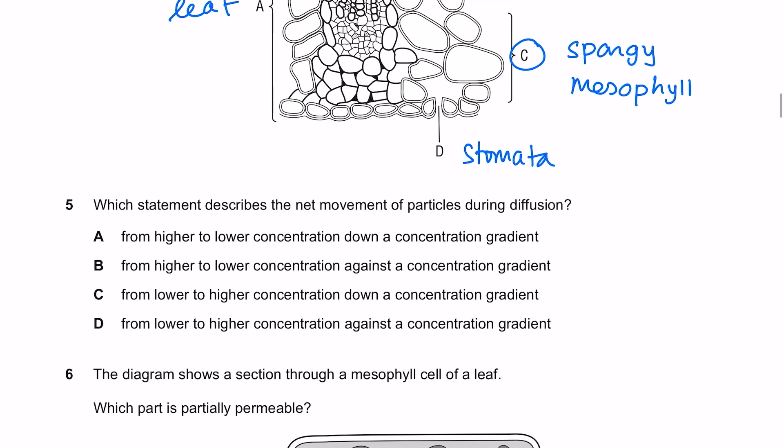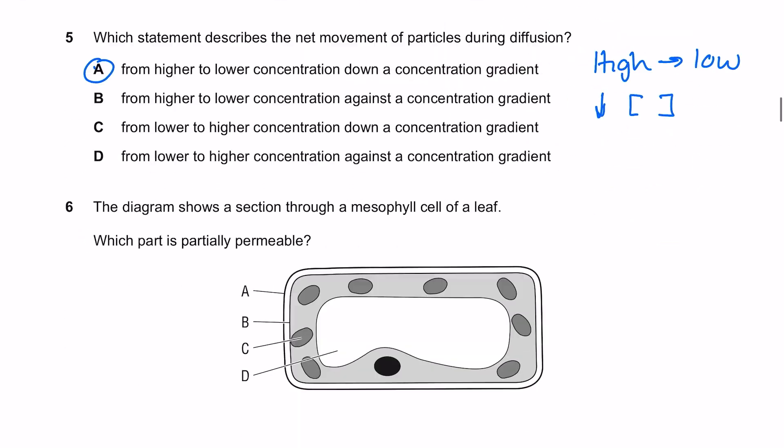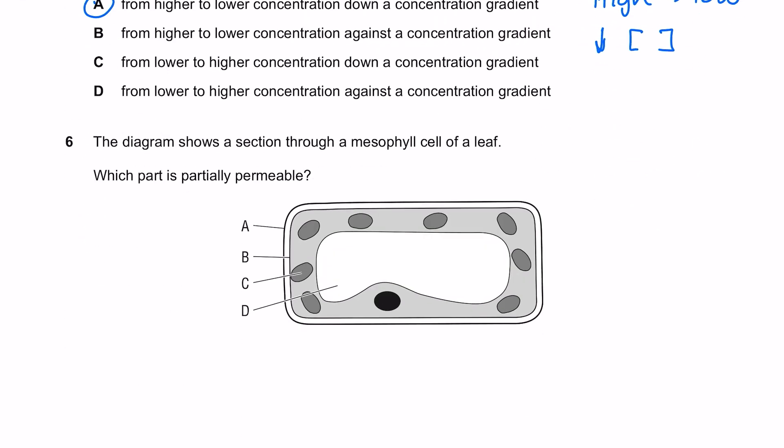Which statement describes the net movement of particles during diffusion? Remember it's from a high concentration to low down a concentration gradient, so A is the answer. The diagram shows a section through a mesophyll cell of a leaf. Which part is partially permeable? You want the cell membrane, that is B.